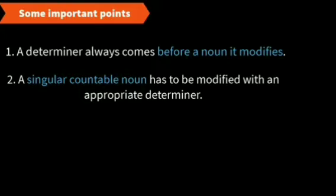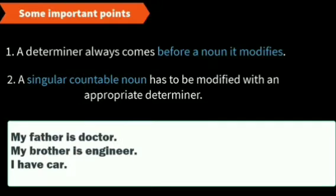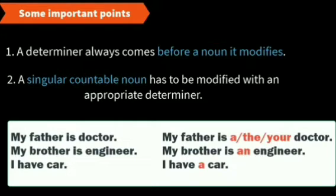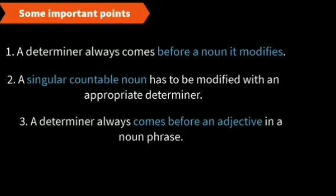Example: 'My father is a doctor. My brother is an engineer. I have a car.' A singular countable noun has to be modified with an appropriate determiner. You will say 'my father is a doctor,' 'my brother is an engineer,' 'I have a car.'